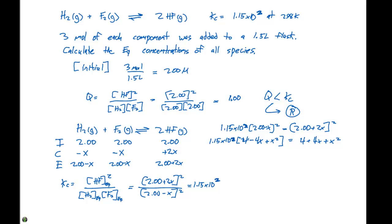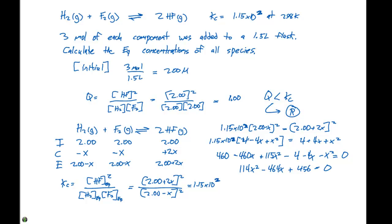Distributing everything through, we get 460 minus 460x plus 115x². Bringing everything to the left side of the equation — minus 4 minus 4x minus x² equals 0 — and combining like terms gives us 114x² minus 464x plus 456 equals 0. Applying the quadratic equation, we find that x equals 1.53 molar.